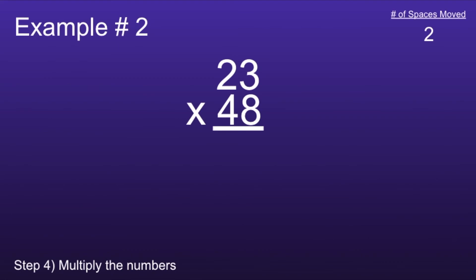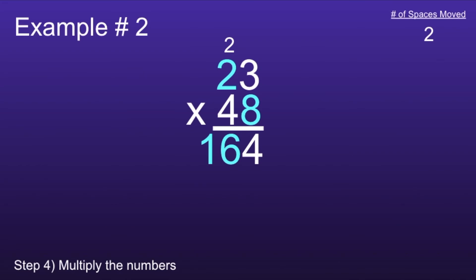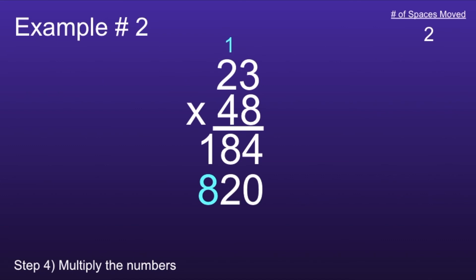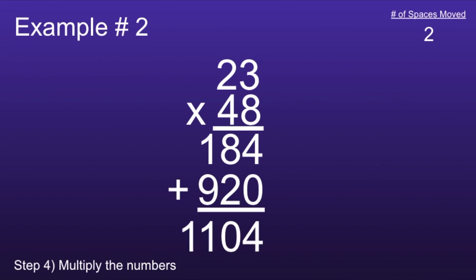Multiply the numbers. 8 times 3 is 24, so I'm going to carry the 2. 8 times 2 is 16, but I also have to add that 2 from before, so 16 plus 2 is equal to 18. Moving on to the second number — notice the 4 is in the tens place, so I have to add a 0 before I continue. 4 times 3 is equal to 12, so I'll keep the 2 and carry the 1. 4 times 2 is equal to 8, but I also have to add that 1 from before — 8 plus 1 is equal to 9. Now I can add these numbers together, which gives me 1,104.